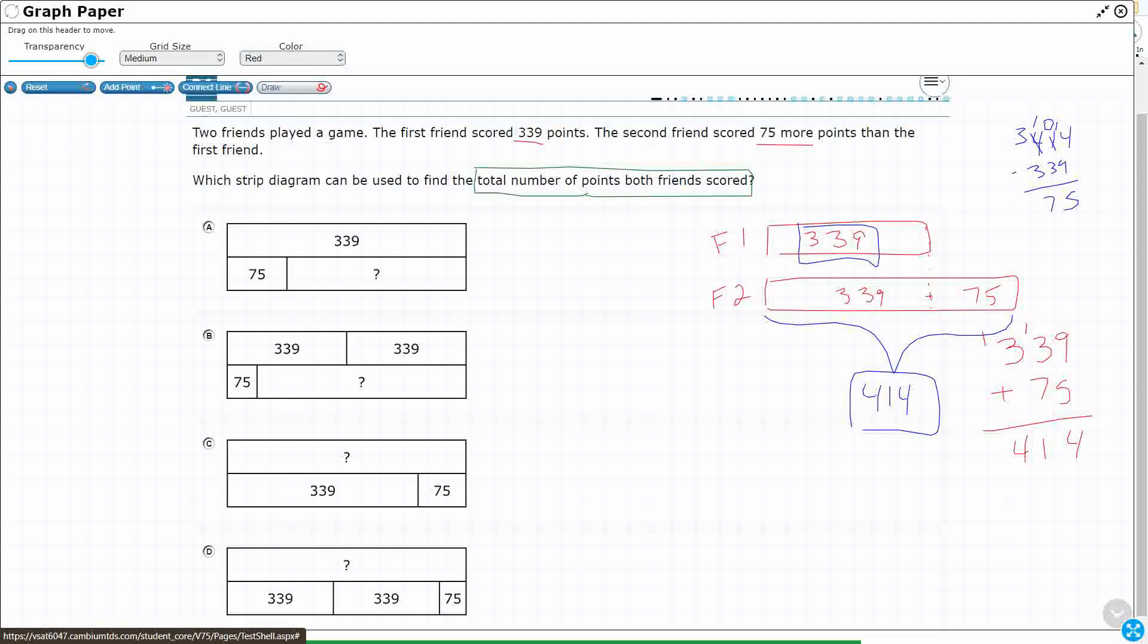Friend 1 scored 339. So now I've got to add the friend 1, 339 plus the friend 2, 414. So that's going to be 13. That's going to be 3, 4, 5. It's going to be 7. All right, so that I think is my final answer, 753. That's the total of both of those together.